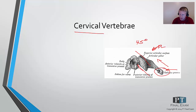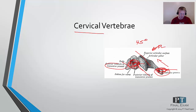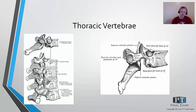Another thing to note is that the spinous process is relatively close to the same plane as the transverse processes. This comes from the old Gray's Anatomy textbooks, but in essence the transverse process is basically right here and the spinous process is about right there — so again, about on the same level.